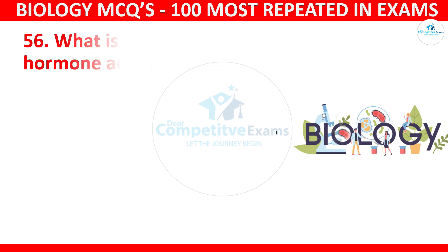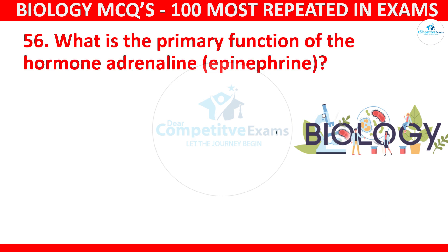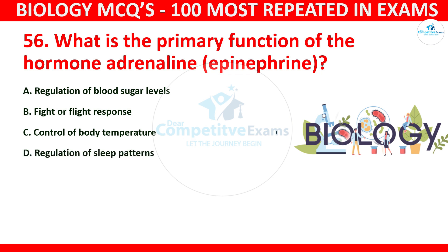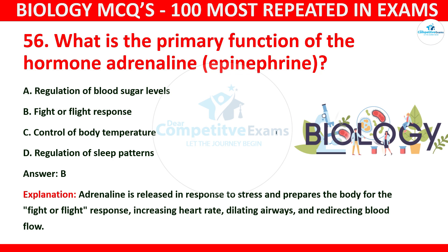Question number 56: What is the primary function of the hormone adrenaline (epinephrine)? The options are regulation of blood sugar levels, fight or flight response, control of body temperature, or regulation of sleep patterns. The correct answer is B: fight or flight response. Adrenaline is released in response to stress and prepares the body for the fight or flight response, increasing heart rate, dilating airways, and redirecting blood flow.